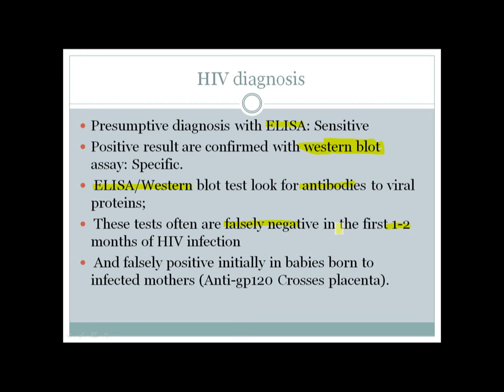Antibody titers may not be high enough early in infection. Tests can also be falsely positive in babies born to infected mothers — the baby may not have the virus but can have anti-gp120 antibody, which can cross the placenta from maternal to fetal circulation, giving a falsely positive blood test or ELISA.